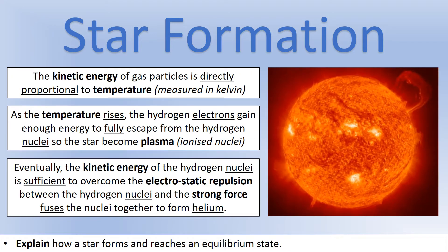Kinetic energy rises, which means the temperature of the star rises. Because as you learn in the thermal physics part of the course, the kinetic energy of gas particles is directly proportional to their temperature measured in Kelvin. As temperature rises, the electrons attached to the hydrogen atoms gain enough energy to actually escape and leave behind hydrogen nuclei. So the star is what we call plasma.